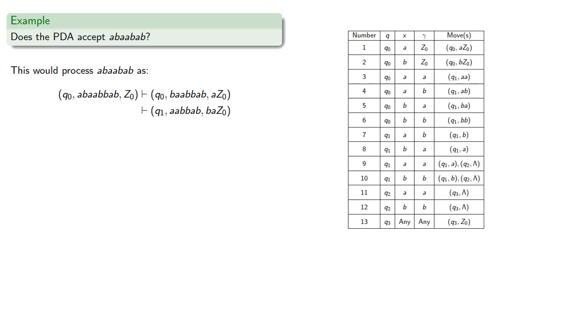Continuing, we're in state q1, the next symbol read is a, and the top stack symbol is b, so we stay in the same state and replace that top stack symbol with the same thing. Next we're in q1, the first symbol is b, and the top symbol is b, so we transition to stay in state q1 and keep that top symbol.